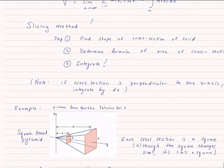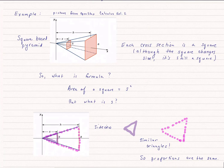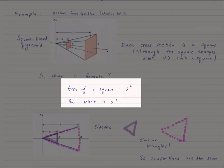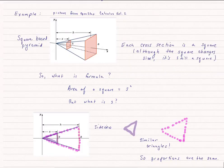So step two is going to be to determine that formula. So how do we determine the formula? Well, I know the area of a square is just s squared, where s is the side of the square. The trouble is we don't know what s is.